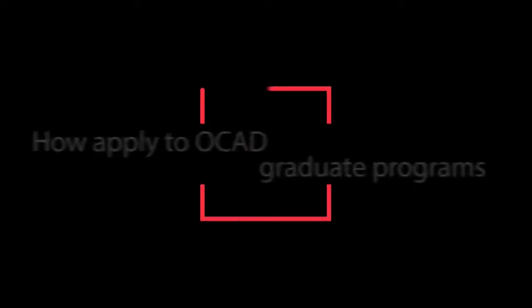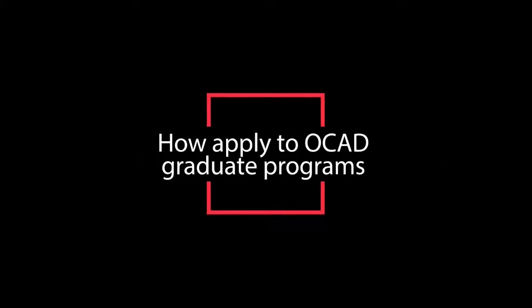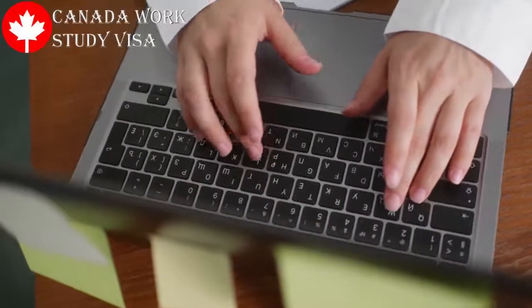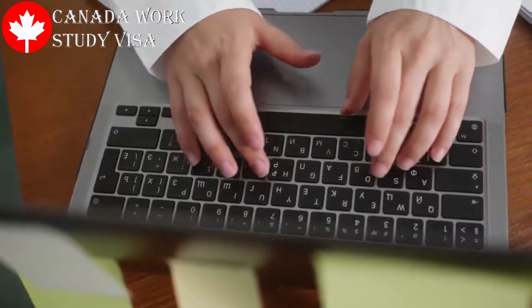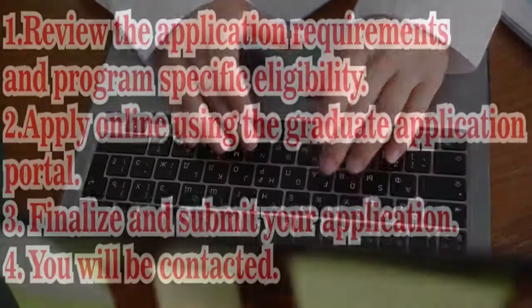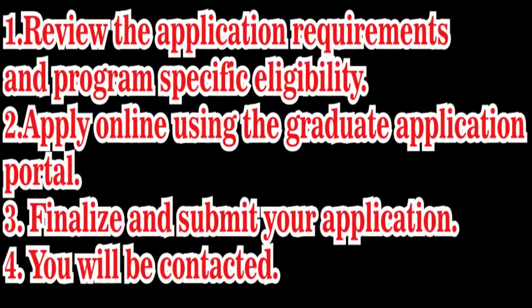How to apply to OCAD University graduate programs. The following steps are required to apply to any program at OCAD University: 1. Review the application requirements and program-specific eligibility. 2. Apply online using the graduate application portal. 3. Finalize and submit your application. 4. The application review process will commence and you will be notified of admission decisions.